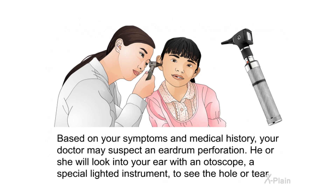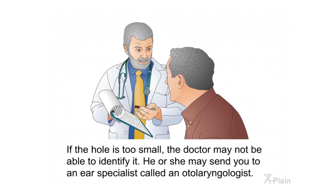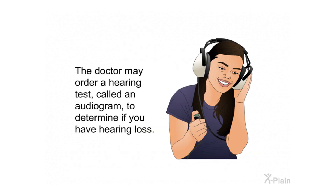Based on your symptoms and medical history, your doctor may suspect an eardrum perforation. He or she will look into your ear with an otoscope — a special lighted instrument — to see the hole or tear. If the hole is too small to identify, the doctor may send you to an ear specialist called an otolaryngologist. The doctor may also order a hearing test called an audiogram to determine if you have hearing loss.